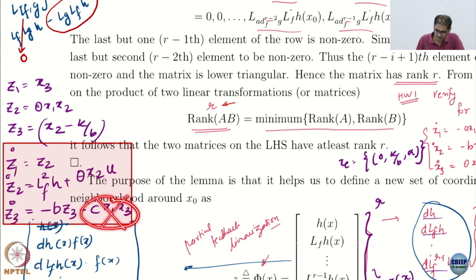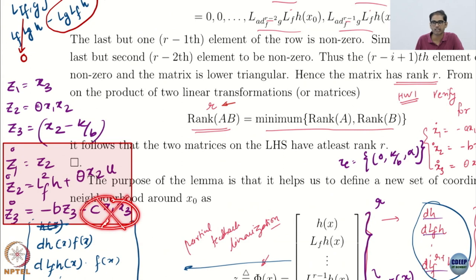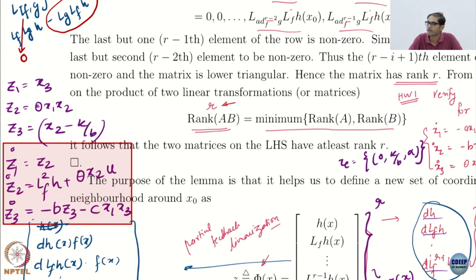Which means most importantly that this coupling term is zero. And when this term is zero, what can I say about this dynamics? It is exponentially stable — Z3-dot equals minus B times Z3. So this is the minimum phase system. The zero dynamics is exponentially stable.